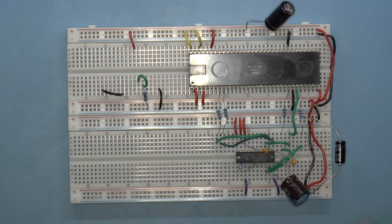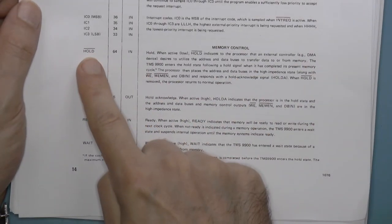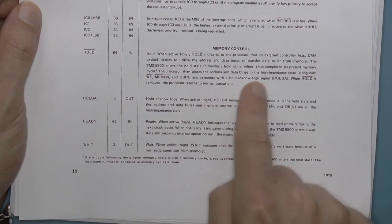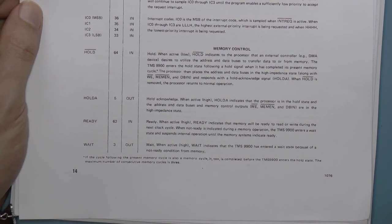Remember last time I said this TMS9900 CPU couldn't be single-stepped using the clock? Link down below. Well, there's this hold signal that when you assert it, the processor finishes up whatever memory access it's doing, then asserts its hold-acknowledged signal, and tri-states its other outputs.